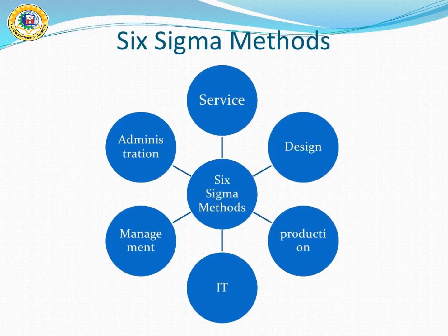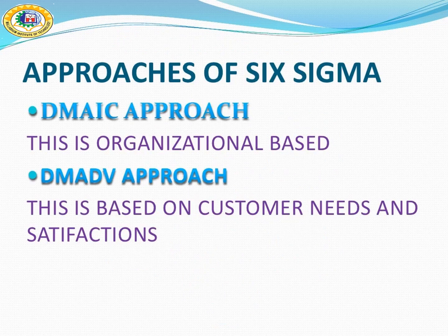Six Sigma refers to a methodology that is driven by management, administration, services, design, production, and information technology. There are mainly two methodologies of Six Sigma: DMAIC and DMADV. DMAIC is a data-driven Six Sigma methodology for improving existing products and processes, whereas DMADV is a methodology used to develop a process or product which doesn't exist in the company.